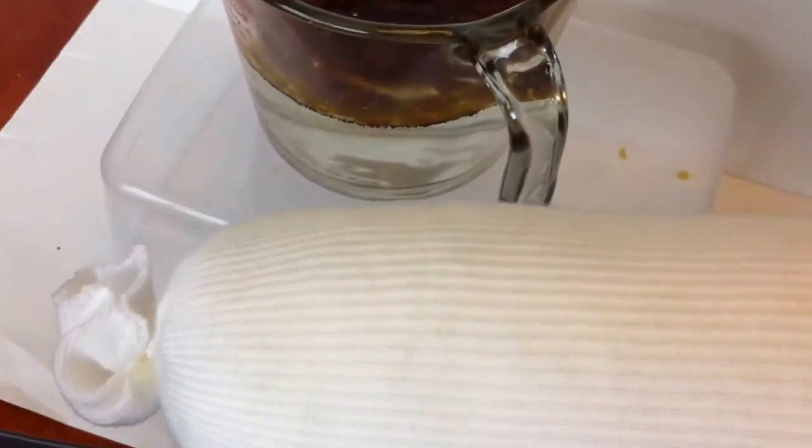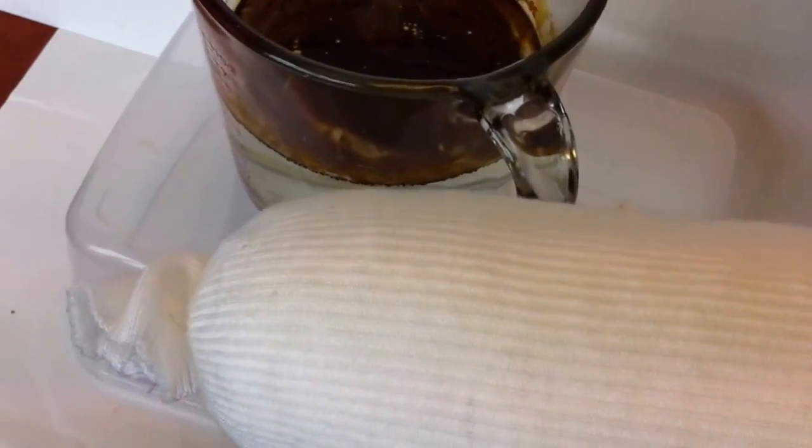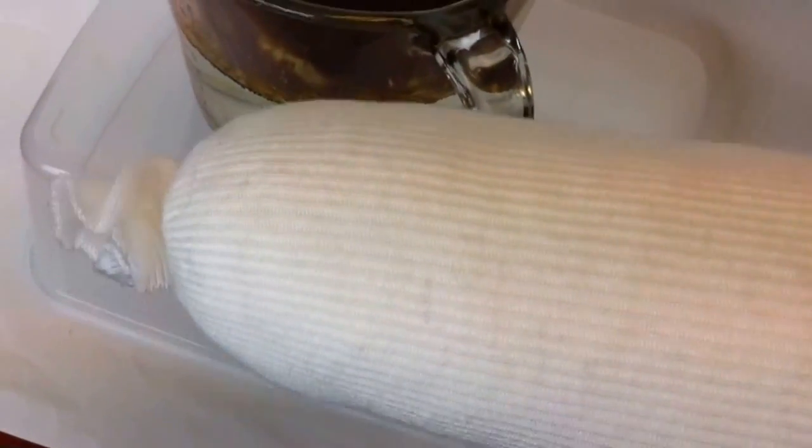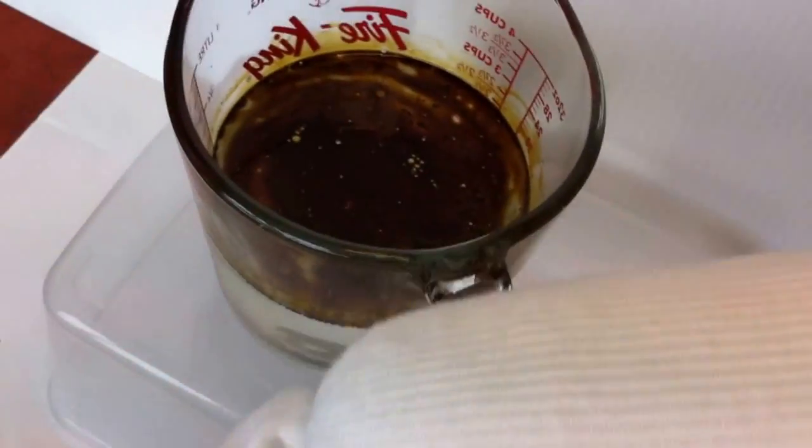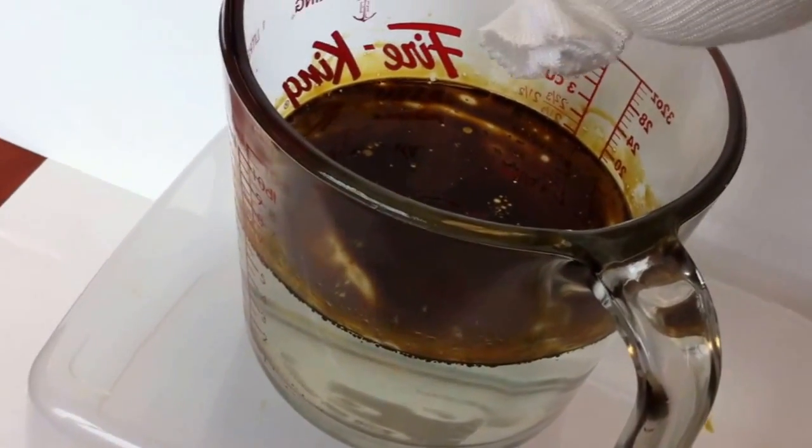It's called a superabsorbent. This is a polymer that's hydrophobic. So in other words, hydro for water, phobic, it's afraid of the water. It'll just simply grab the oil.